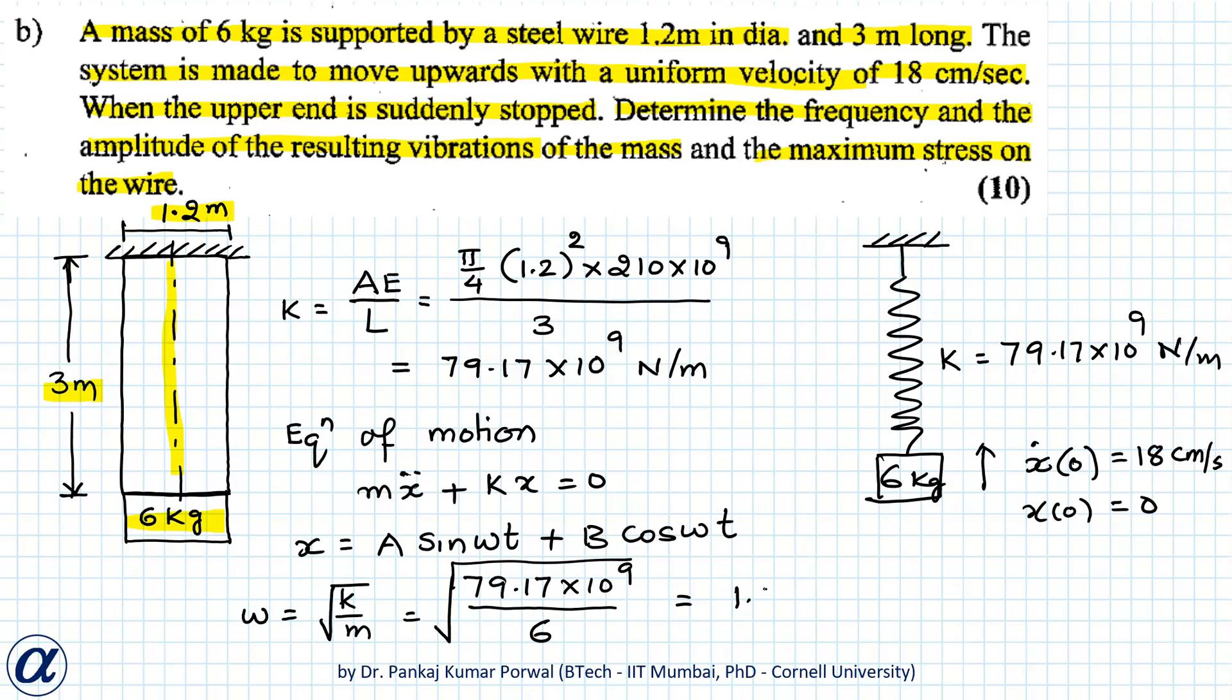That is equals to 1.15 into 10 to the power 5 radian per second. So the frequency of vibration will be 1.15 into 10 to the power 5 radian per second. Next we will find amplitude of this motion by solving this equation of motion with these two initial conditions.